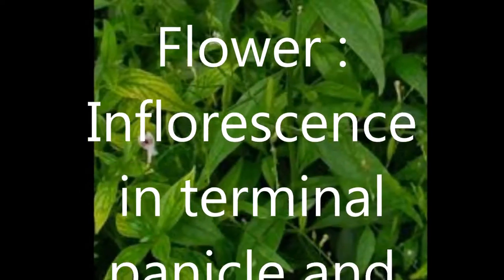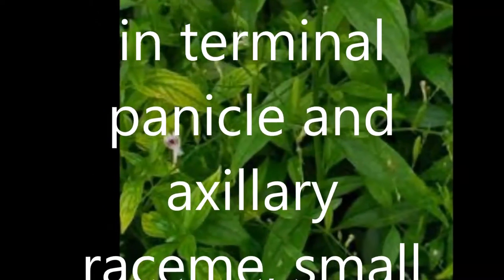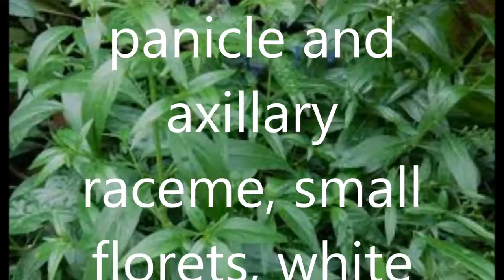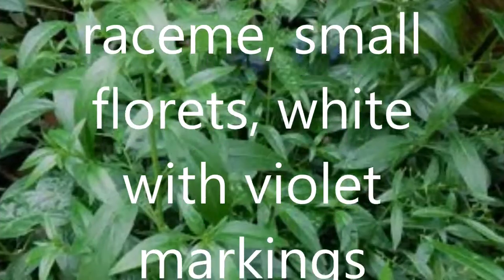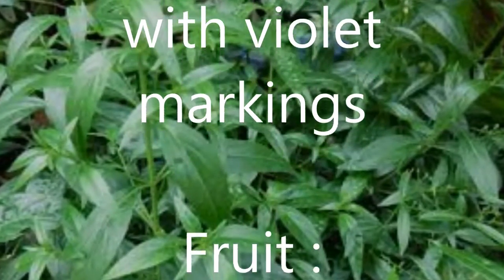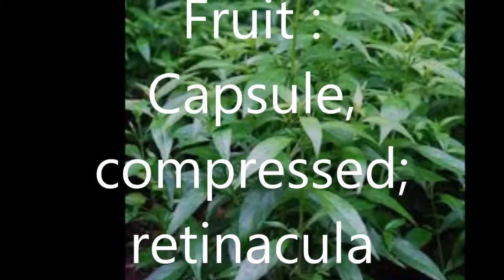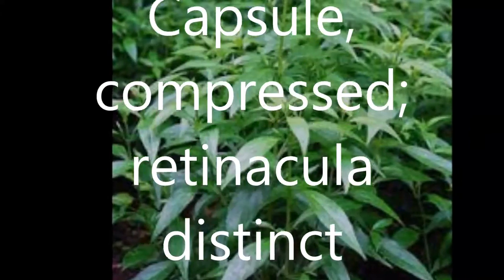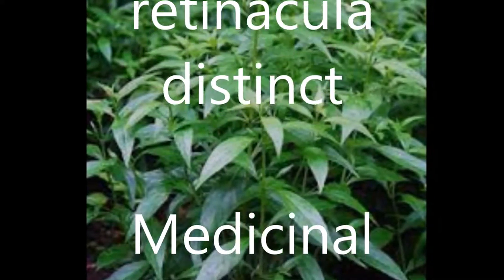Flowers white, fragrant. Fruit: berry, black color. Medicinal uses: leaf and dried flower are cardiotonic, used for treatment of faintness and as an antipyretic ingredient in your home.